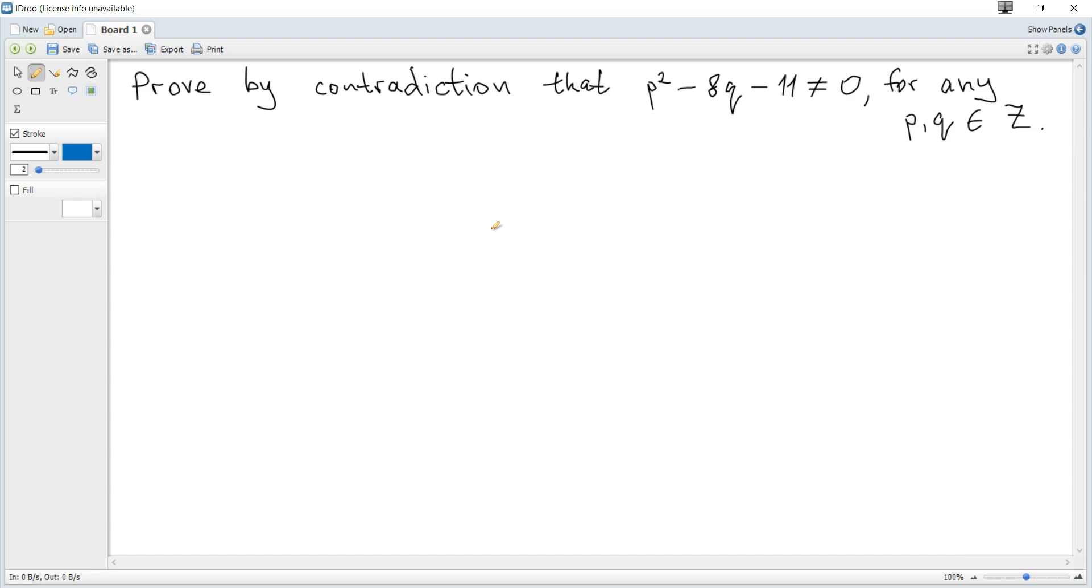Prove by contradiction that P² - 8Q - 11 ≠ 0 for any P, Q ∈ integers. The first step is as usual: we start with a negation. We assume that the given statement is false.